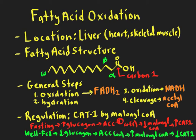If we recall that the fatty acid structure is a hydrocarbon tail with a carboxyl end, we can see the labeling of the carbons: carbon number one is the carbonyl carbon. Then we have the alpha carbon, which is carbon two, and the beta carbon, which is carbon three. The final carbon in the hydrocarbon chain is the omega carbon. A lot of the business of fatty acid oxidation occurs at the beta carbon, which is why this is often referred to as beta oxidation.